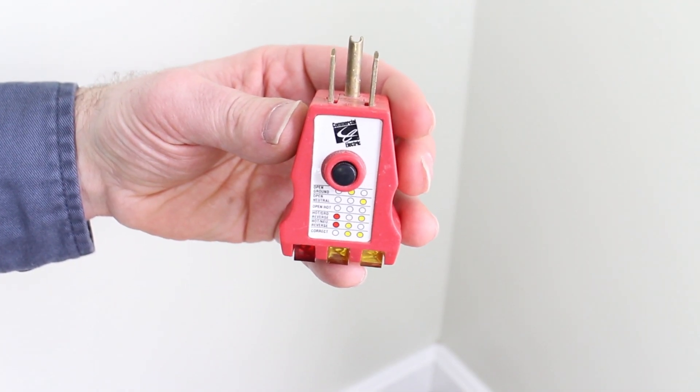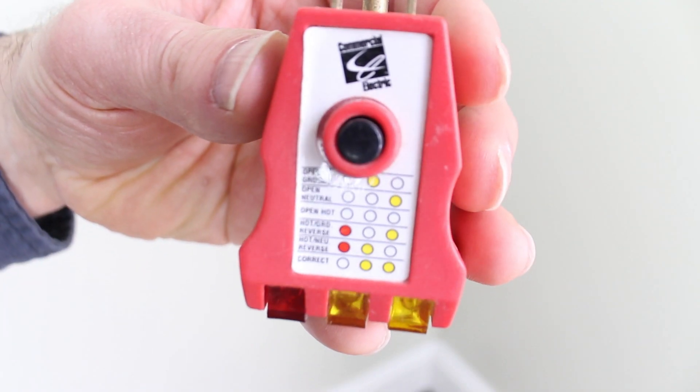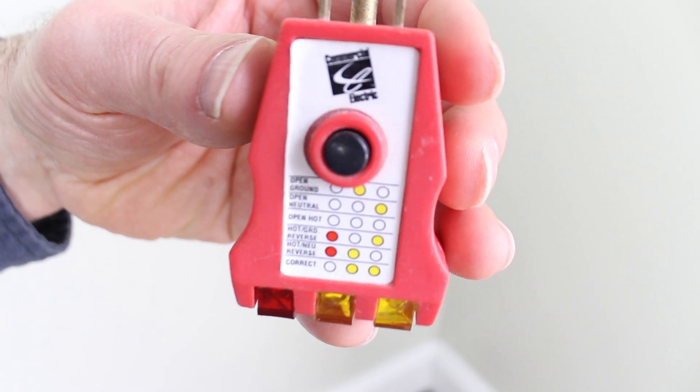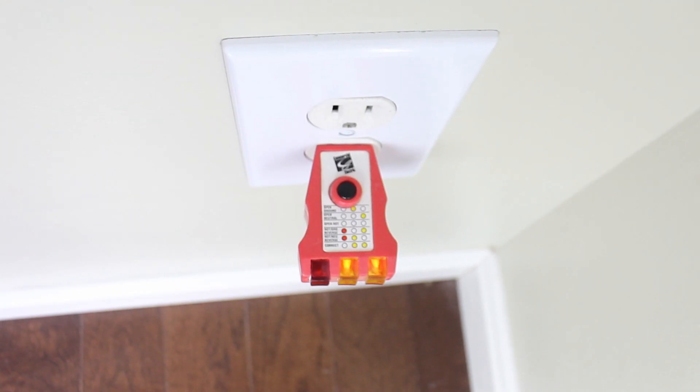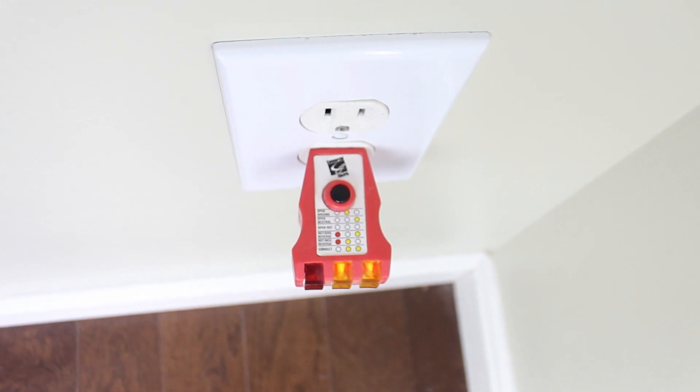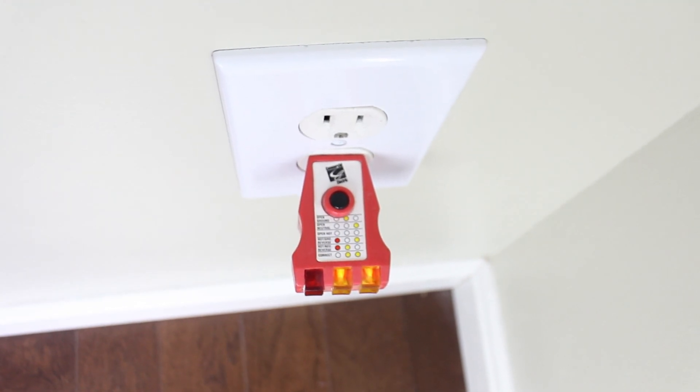Grab yourself a circuit analyzer or receptacle analyzer like this one here because it'll tell you whether or not your outlet is wired the right way. Plug it into the outlet and look at the two lights that are yellow. That indicates that it is in fact wired correctly.